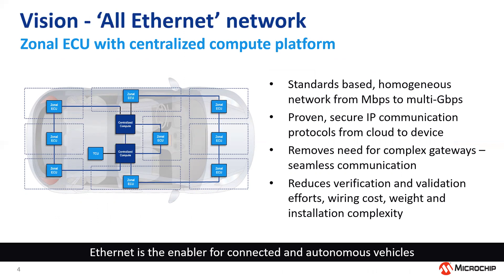Ethernet is the enabler for the connected and autonomous vehicle, and it is a real need for the zonal ECU and the centralized compute platform. As you can see on the block diagram, the ECUs are not domain-based but zonal — in each of the zones they collect and move data through all the actuators and sensors within that zone, and all that data is pushed up to this central compute platform to do all the number crunching and intelligence for vehicle operation. That really leads to Ethernet being the network to connect all these ECUs and compute platforms together, where everything can connect to everything — you need a homogeneous network like Ethernet for that.